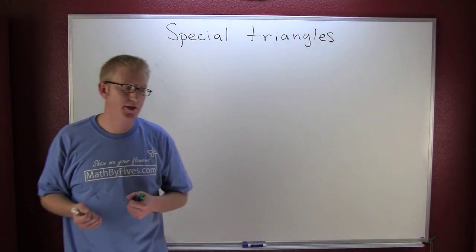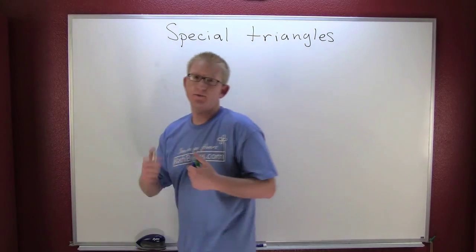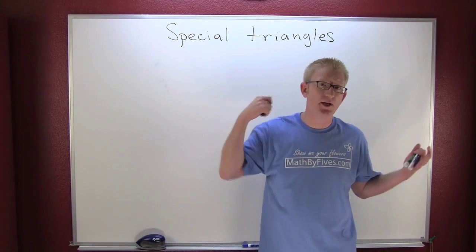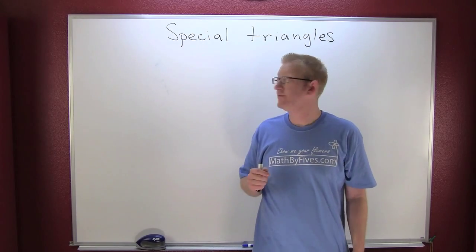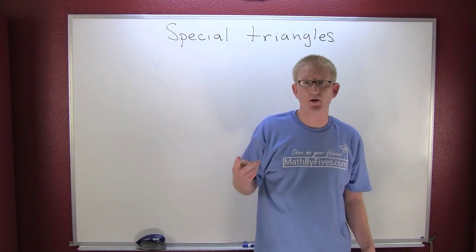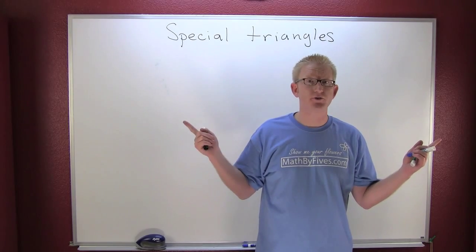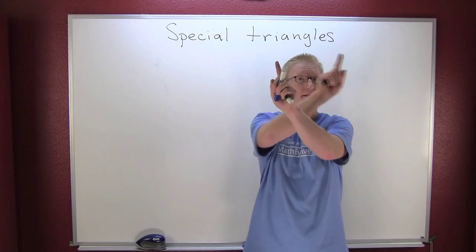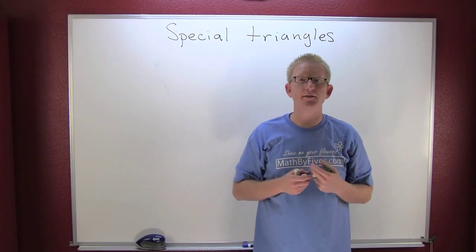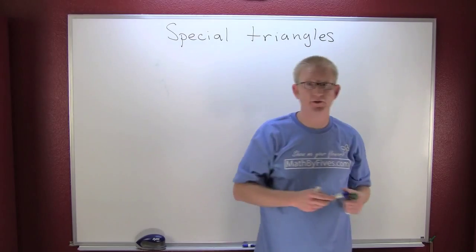Special triangles - why are they so special? Because it helps us in trigonometry and in geometry. It's quick and easy, helps us get exact values in our trigonometry. There's two special triangles: the 45-45-90 triangle and also the 30-60-90 triangle. Why don't we take a look at the 30-60-90 first?